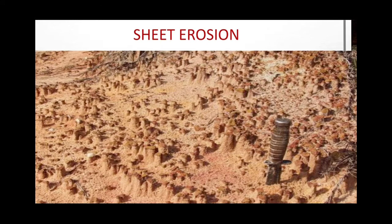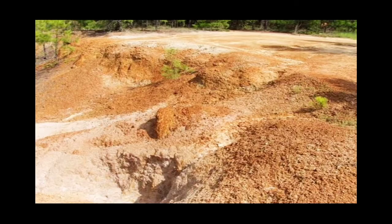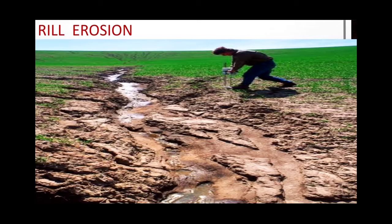As a result, the land is rendered infertile and unfit for agriculture. This picture also shows how the top layer of soil has been removed. The land now requires a lot of fertilizers and artificial irrigation so that cultivation can be done.